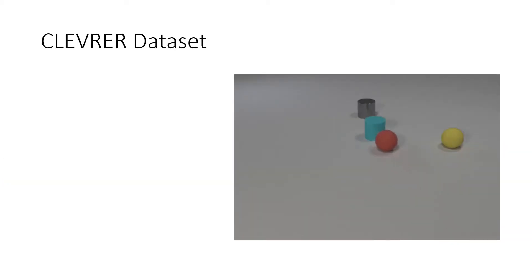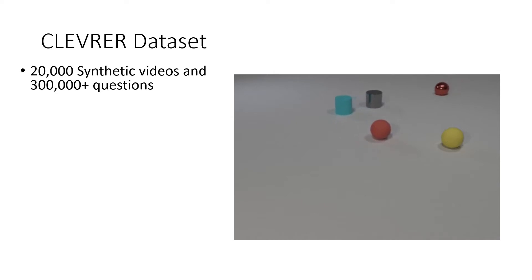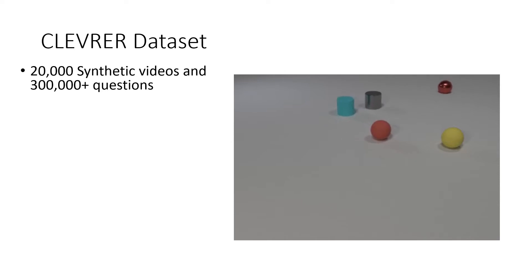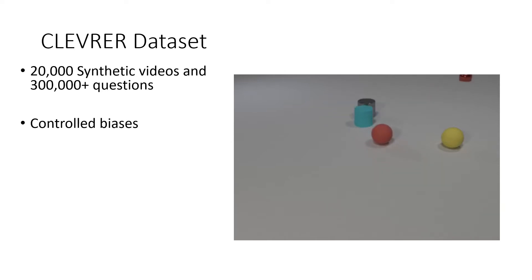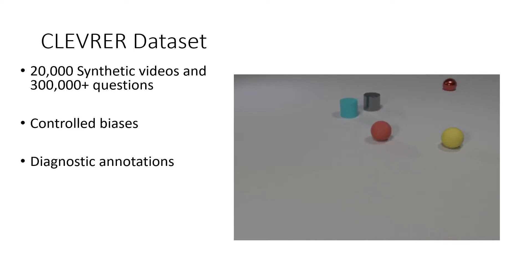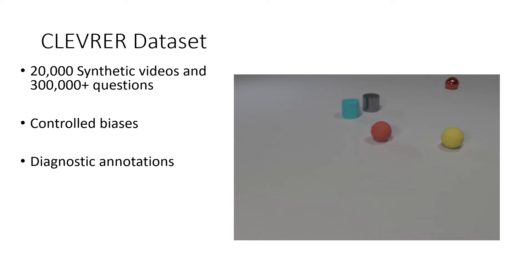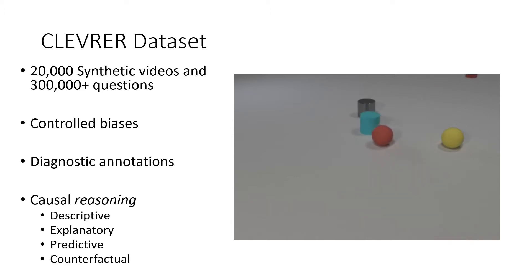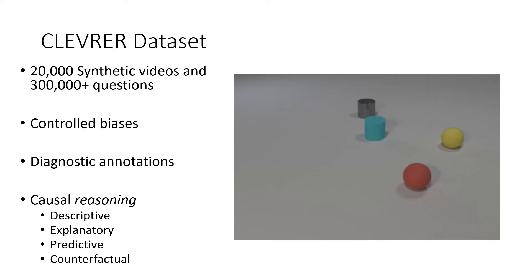The CLEVRER video dataset consists of 20,000 synthetic videos and around half a million questions with well-controlled variables. It also provides ground-truth annotation of video states for model diagnosis. The questions include four different types of tasks focused on causal reasoning: descriptive, explanatory, predictive, and counterfactual.